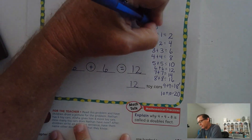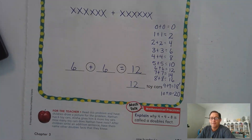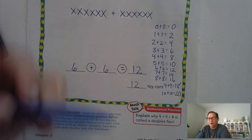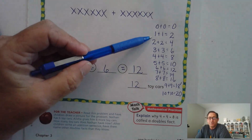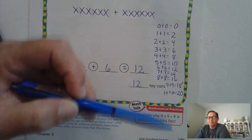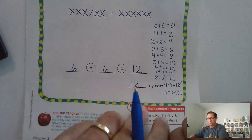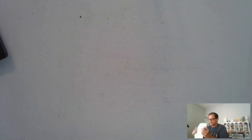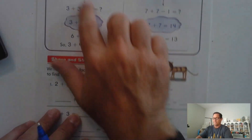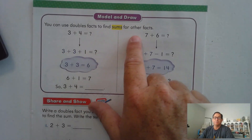I should also put 0 plus 0 — that is a double, but 0 plus 0 is just 0. So these are some double facts we should know. Why is that important? Because I can use these double facts to find the sum of other problems. Let's look at page 122.